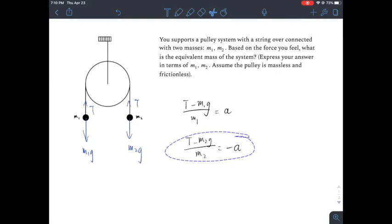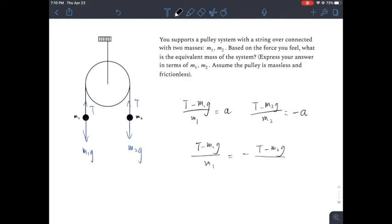And because they are equal and opposite, as you see, they are connected by a single rope, you can equate two of the expressions. Then we have T minus m1g divided by m1 equals negative T minus m2g divided by m2. Then we do some simplification of the equation and we can solve for T because T is unknown.